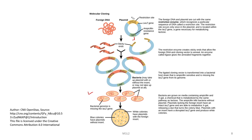The plasmid has certain antibiotic resistance genes which help us in the selection of the mutants. The foreign DNA and the plasmid are cut with the same restriction enzyme, which recognizes a particular sequence of DNA called a restriction site. The restriction site occurs only once in the plasmid and is located within the lac-Z gene, which is necessary for metabolizing lactose. We will discuss the role of this in lac-Z expression later on.